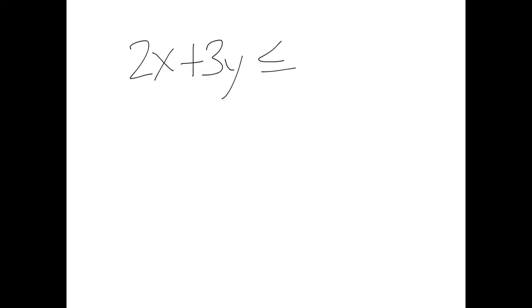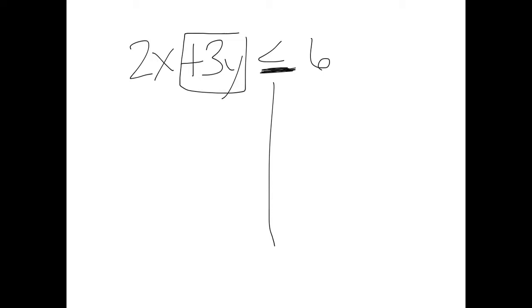Two-variable or regular linear inequalities look more like this: 2x + 3y ≤ 6. With two-variable inequalities, our goal is to isolate y and get it by itself. These are the ones where we have shading and solid or dotted lines. When we look at that symbol immediately — if it has a line underneath it, it's automatically a solid line, and that's never going to change.